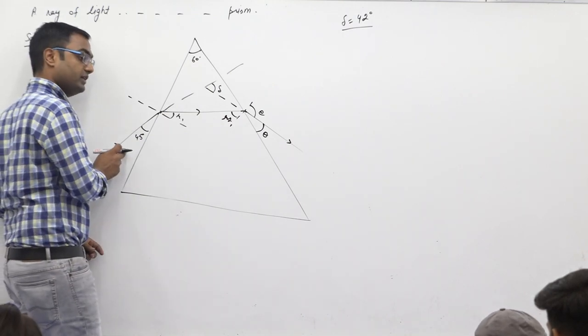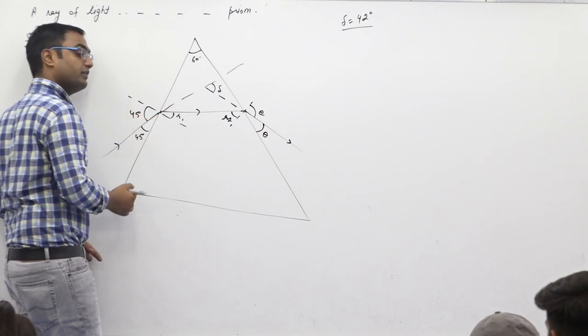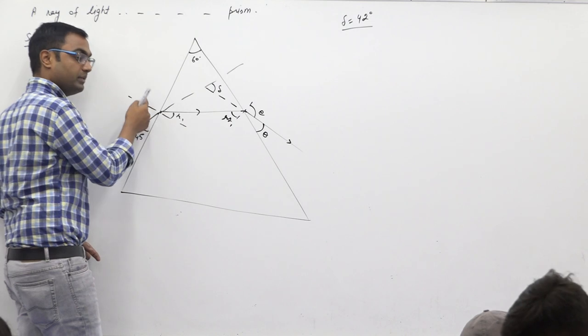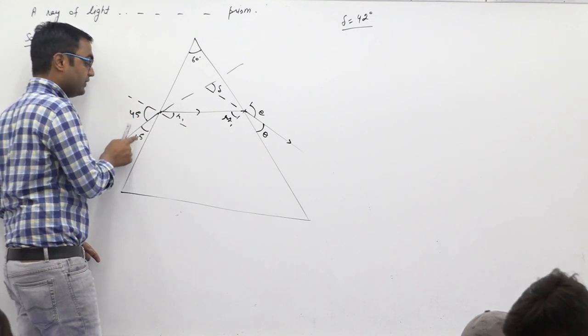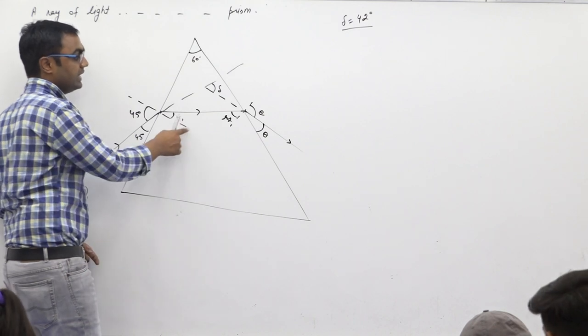This is 45. What is the angle here? It will be 45. How much is it here? 90. How much is it here? 45. This is R1, R2, and E.